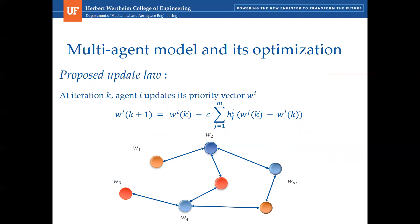Here's the update law for the vector of priorities, where c is a constant between 0 and 1 over the maximum value of the degree matrix. H is the adjacency matrix. This means that the weight or priorities of agent i are updated based on the weight or priorities agent i communicates with.